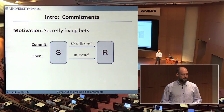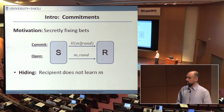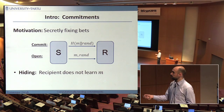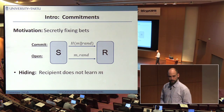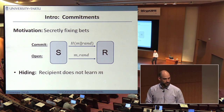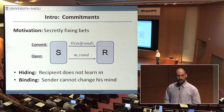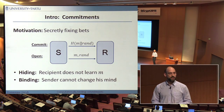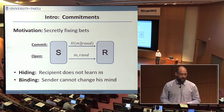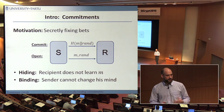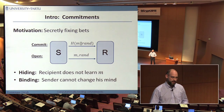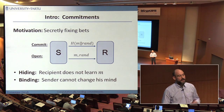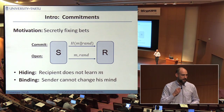There are two properties that a commitment should have. The first is it should be hiding — the recipient should in the commit phase not learn what m is; he shouldn't know which horse I'm betting on. And second, it should be binding: the sender should not be able to change his mind about which message m he is committing to. If he could change his mind, he'd just wait until he knows which horse wins and then say that's what he was betting on all along.